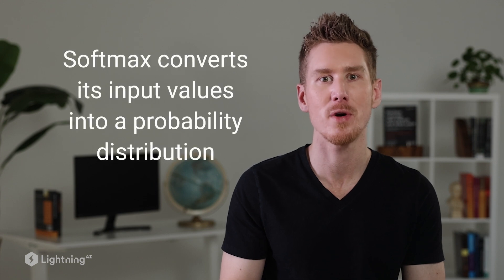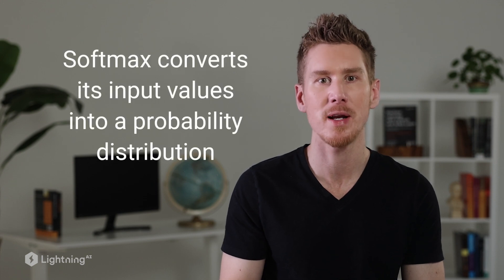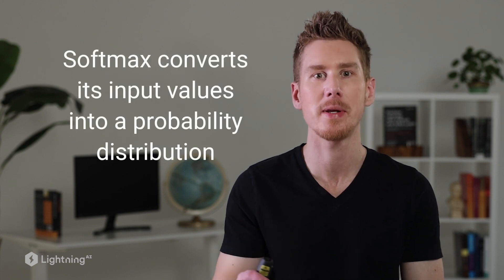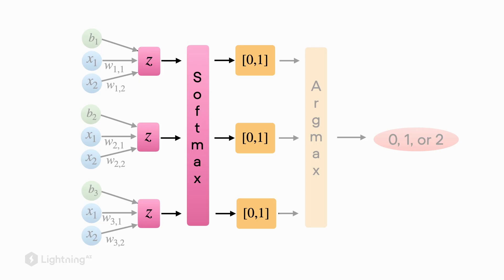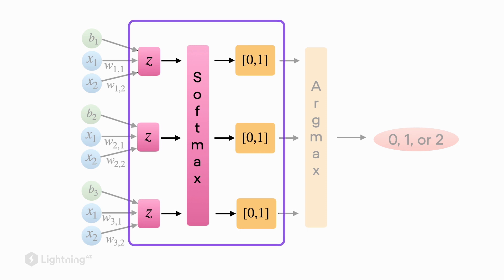So we might say that the Softmax converts its input values into a probability distribution. Let's take a quick look at the Softmax activation function — we are focusing on the part that converts the net inputs into probability scores that sum up to one.